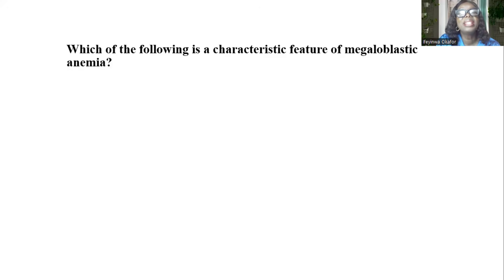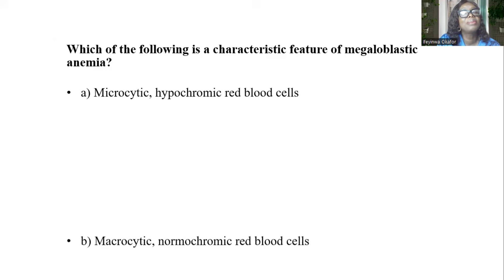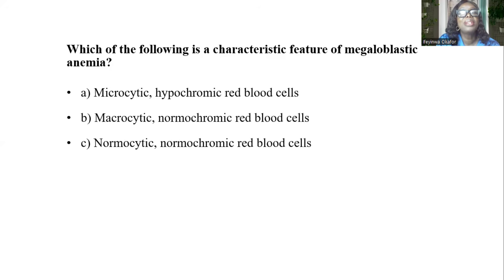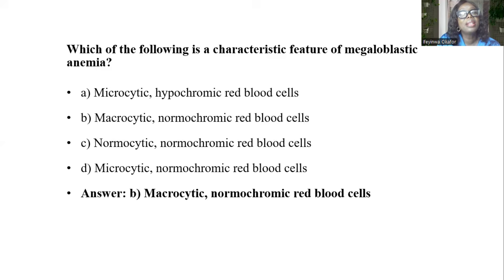Which of the following is the characteristic feature of megaloblastic anemia? A, microcytic hypochromic red blood cells. B, macrocytic normochromic red blood cells. C, normocytic normochromic red blood cells. D, microcytic normochromic red blood cells. And our answer is B, macrocytic normochromic red blood cells.